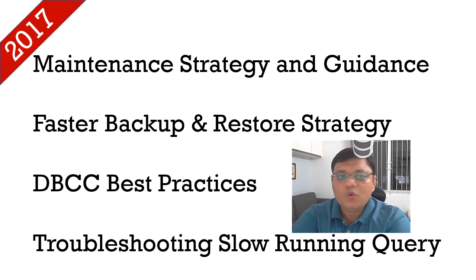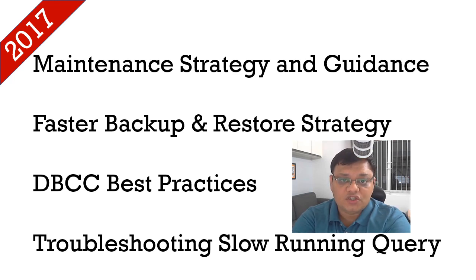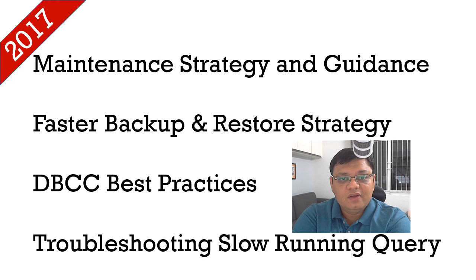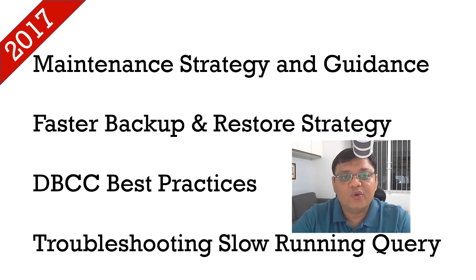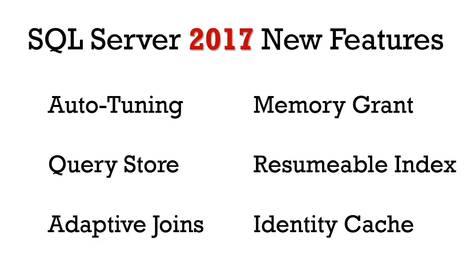Think about this — you are a DBA in your organization and you want to have scripts available in your toolbox that you can immediately use to get maximum performance from SQL Server 2017 or any version down to 2008 R2. You need to attend this pre-conference because I will not only provide the scripts, I will also explain how to use them. Just getting the scripts alone won't solve your problem. If you are upgrading to 2017, we'll be talking about automatic tuning, memory grant, query store, resumable index, adaptive joins, and identity cache.